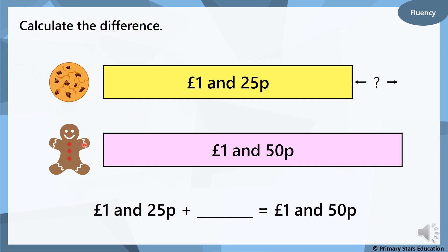This time we're going to buy a cookie and a gingerbread man. The cookie costs one pound and 25 pence. The gingerbread man costs one pound and 50 pence, so we need to find out what the difference is. Since they both have one pound, we count from 25 pence up to 50 pence: 35, 45 — that's 20p — then 46, 47, 48, 49, 50 — that's 25 pence. So one pound and 25 pence plus 25 pence equals one pound and 50 pence.